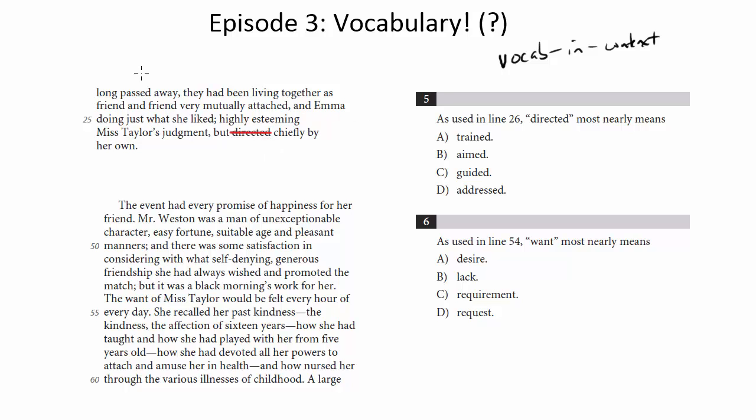Let's check this one out. Long passed away, they had been living together as friend and friend, very mutually attached, and Emma doing just what she liked, highly esteeming Miss Taylor's judgment, but blank, directed, chiefly by her own. So she's being directed by her own judgment. So she is being, the word I want to use here is guided, and it ends up being one of the choices.